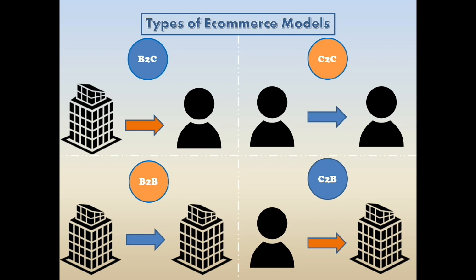The fourth one is Consumer to Business, or C2B — when a consumer sells their own products or services to a business or organization. For example, an influencer offers exposure to their online audience in exchange for a fee, or a photographer licenses their photo for a business to use.